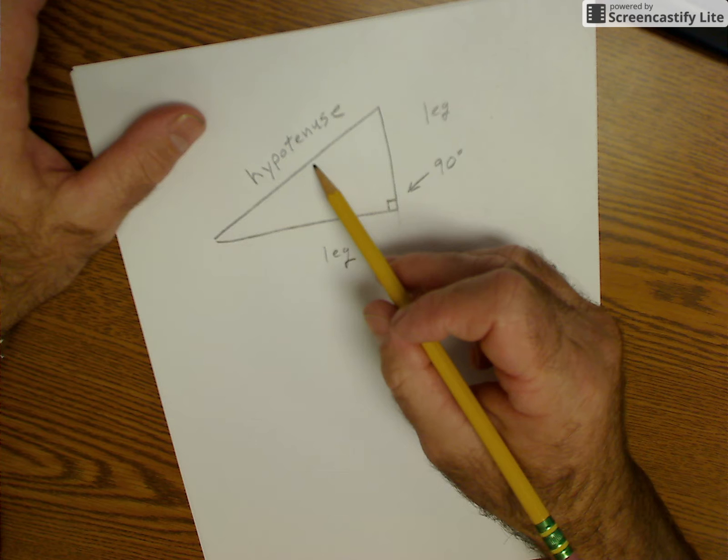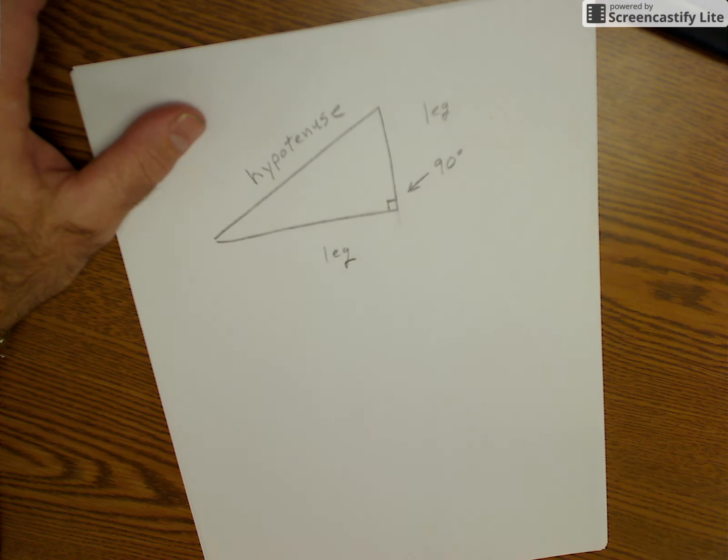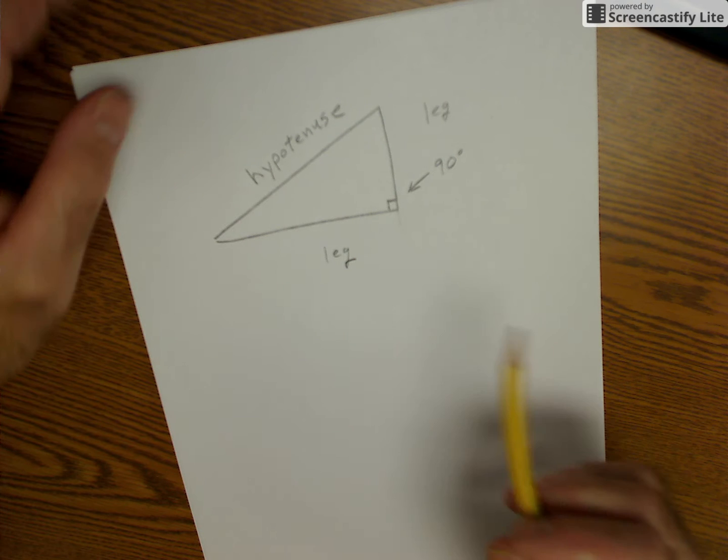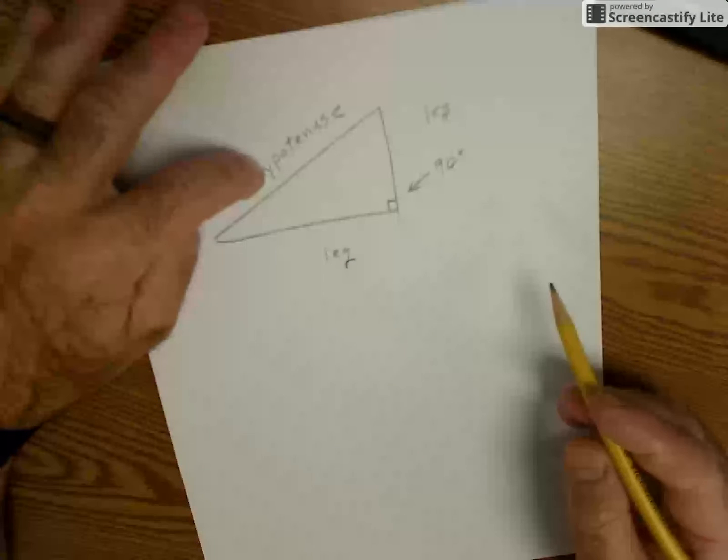I'm able to find that hypotenuse given the two legs using the Pythagorean theorem. So the hypotenuse is always the longest side of a right triangle.